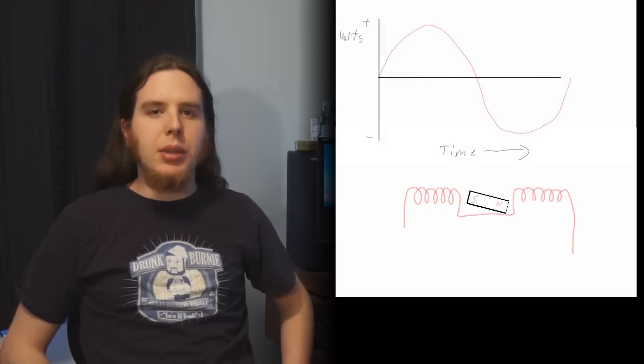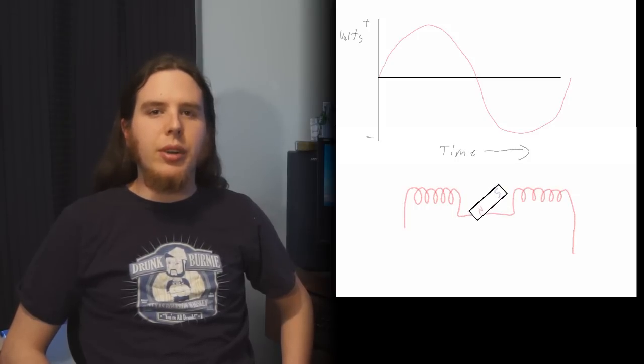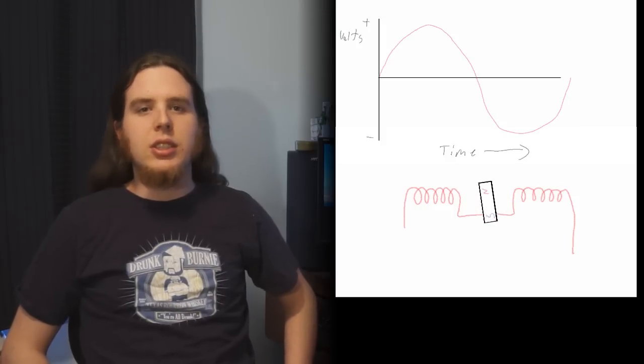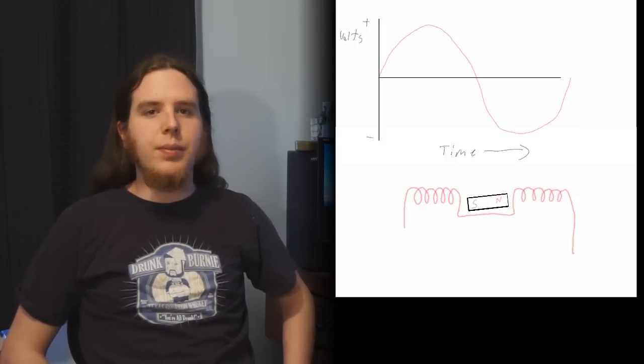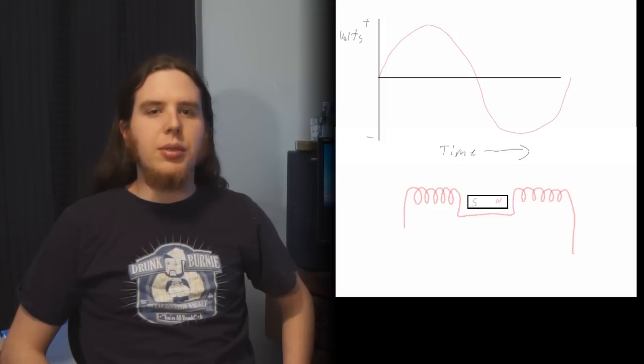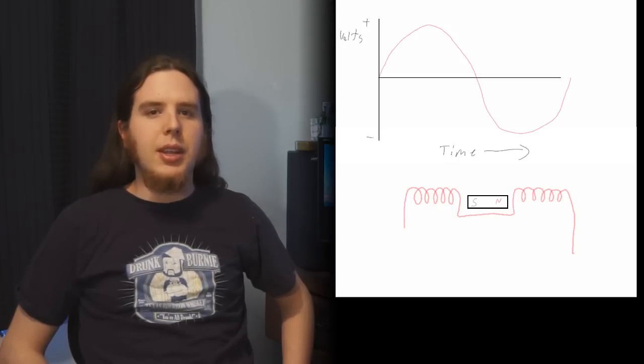As you spin the magnet, the polarity of the magnetic field changes direction, passing through the coil, causing a voltage to develop on the coil that changes direction in the same frequency that the magnet changes direction. This produces a single voltage that goes from zero up to a maximum, down to zero, to a minimum, and then back to zero.